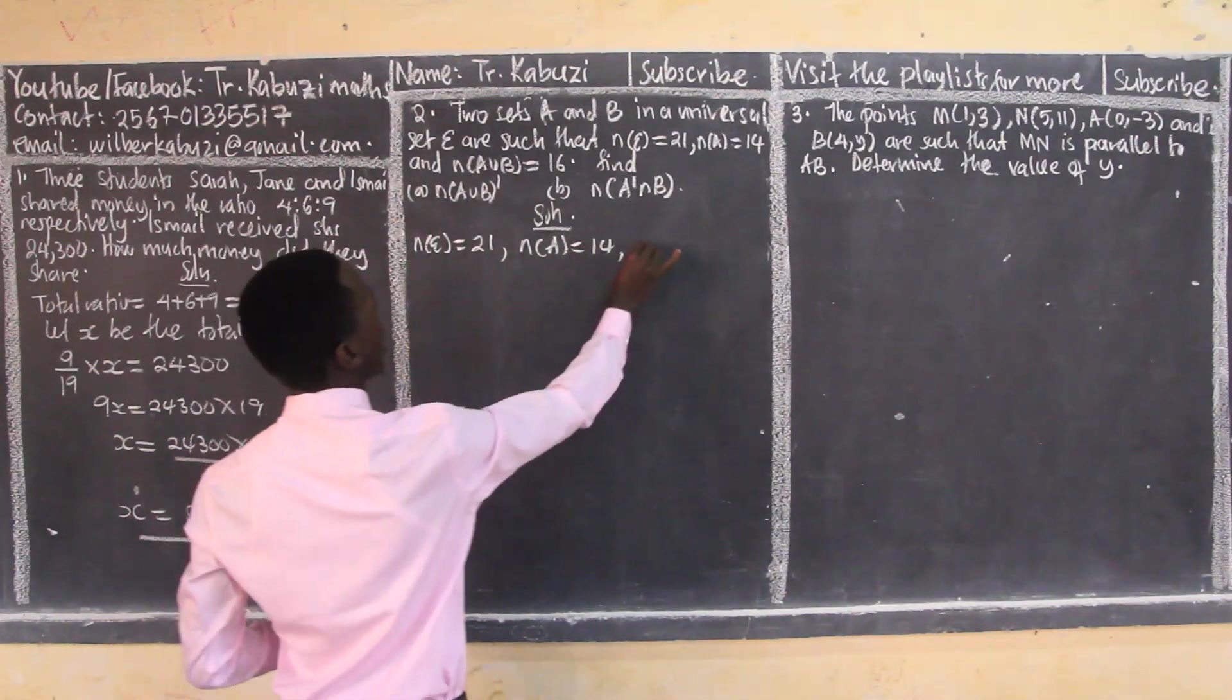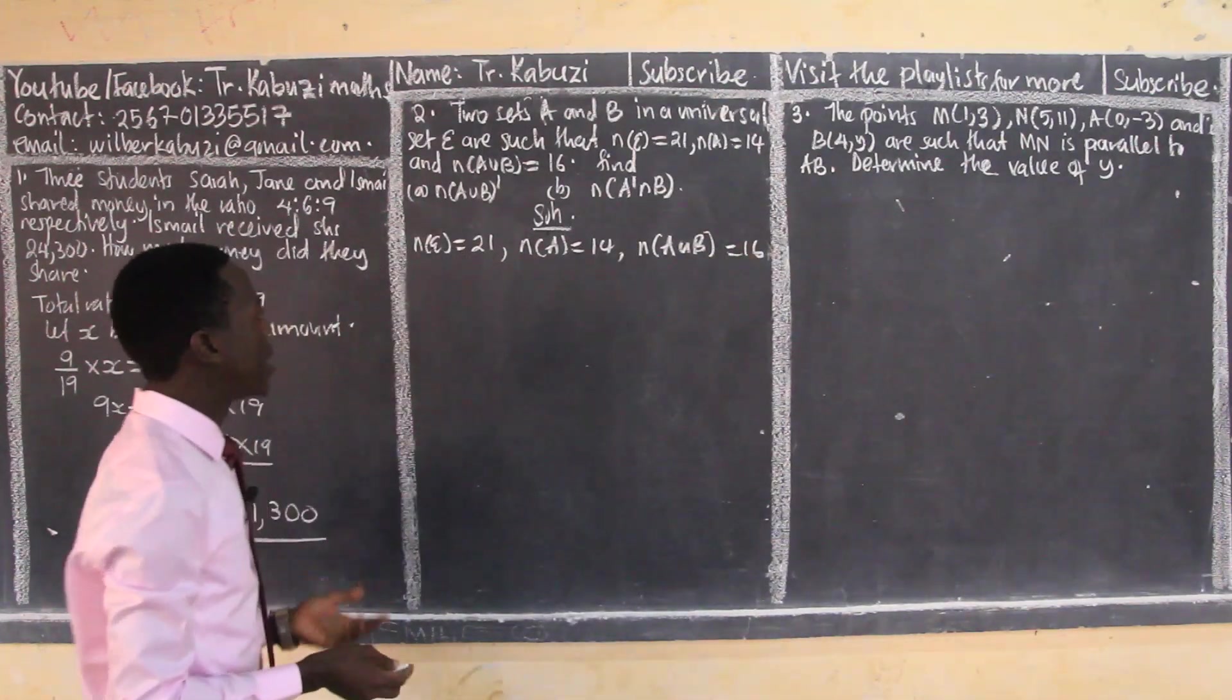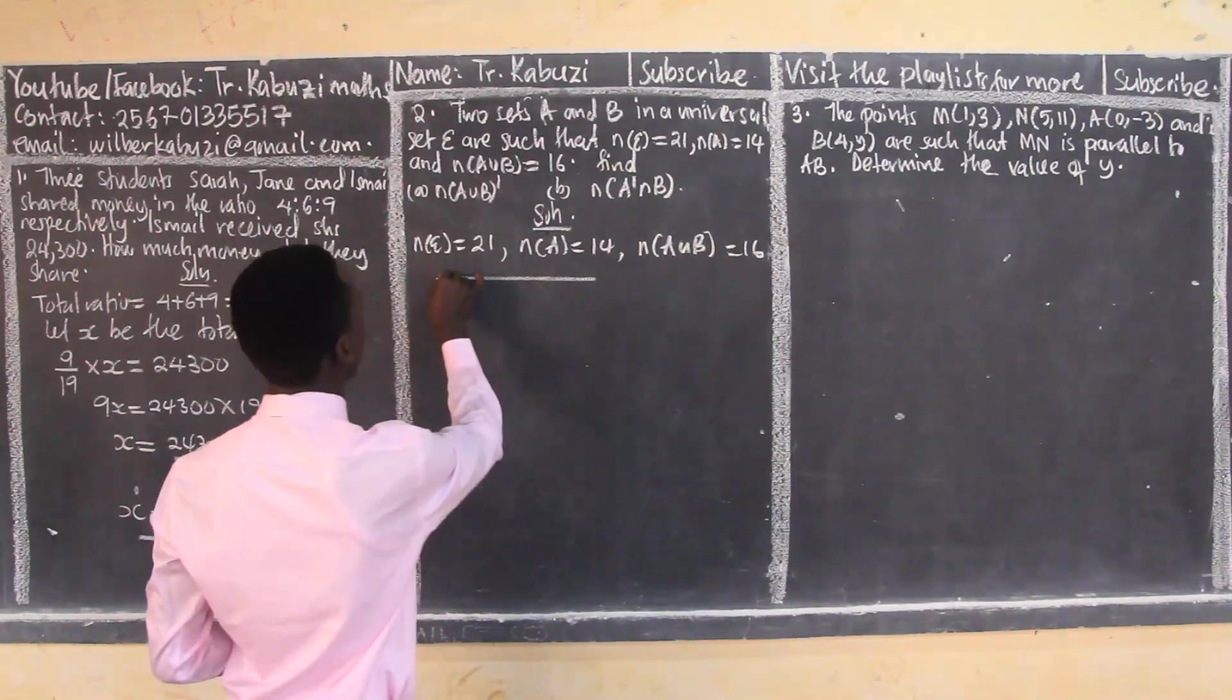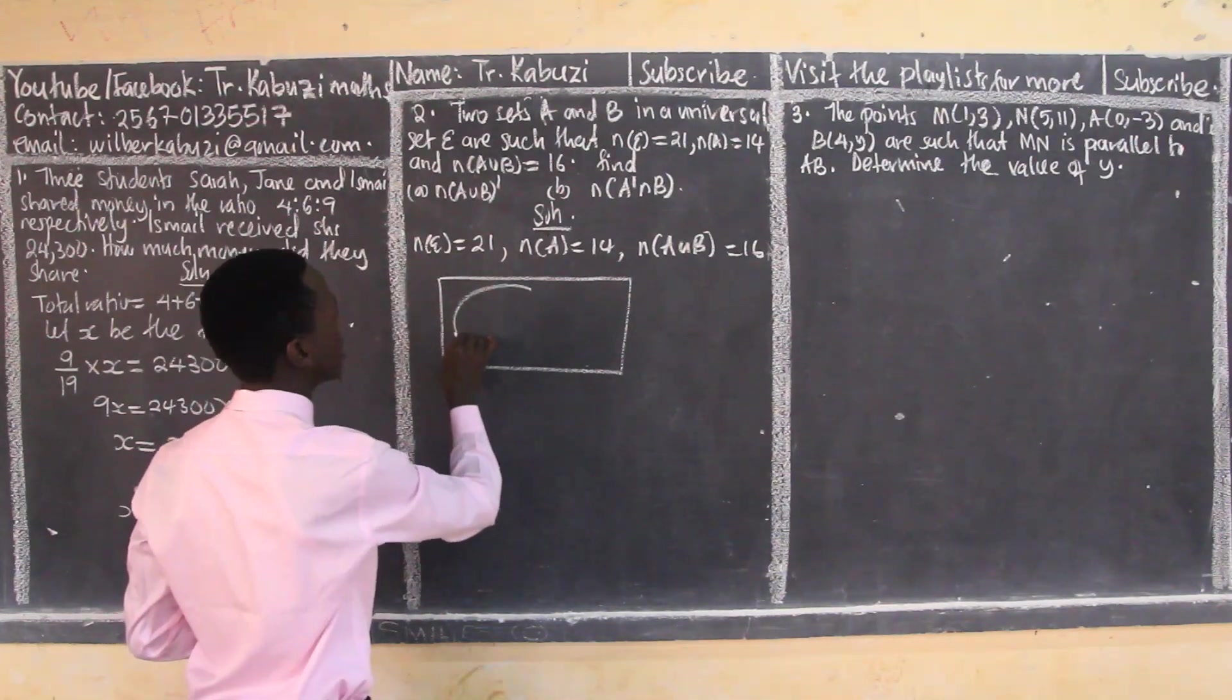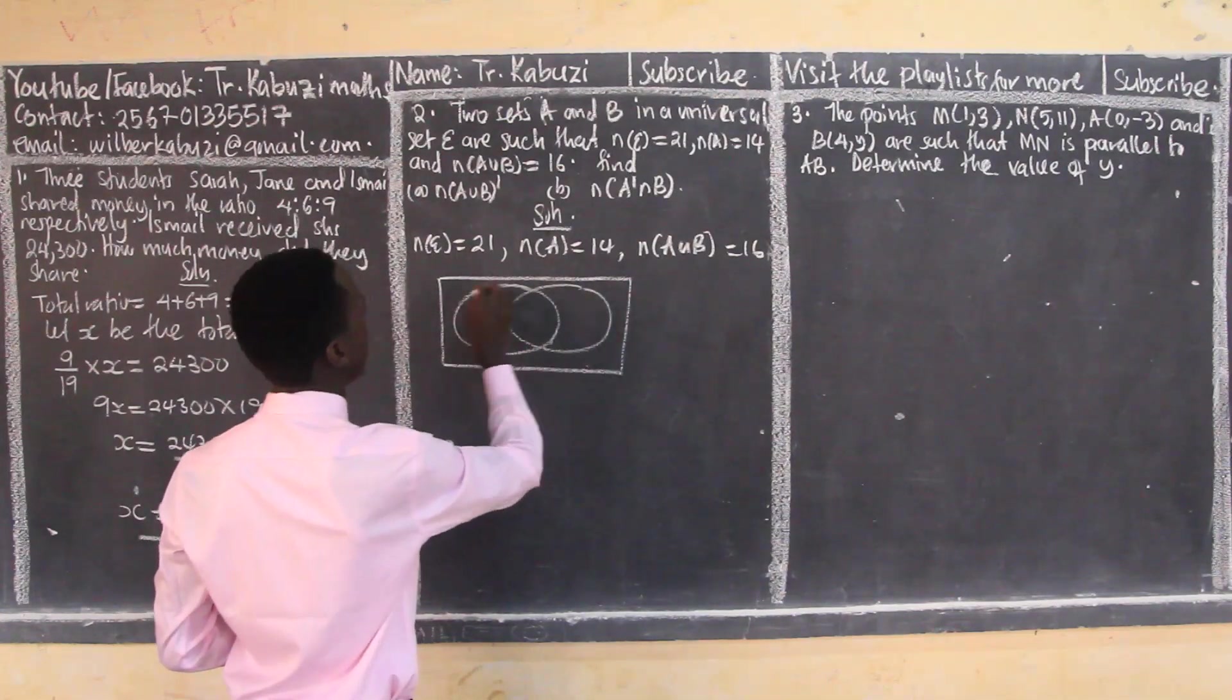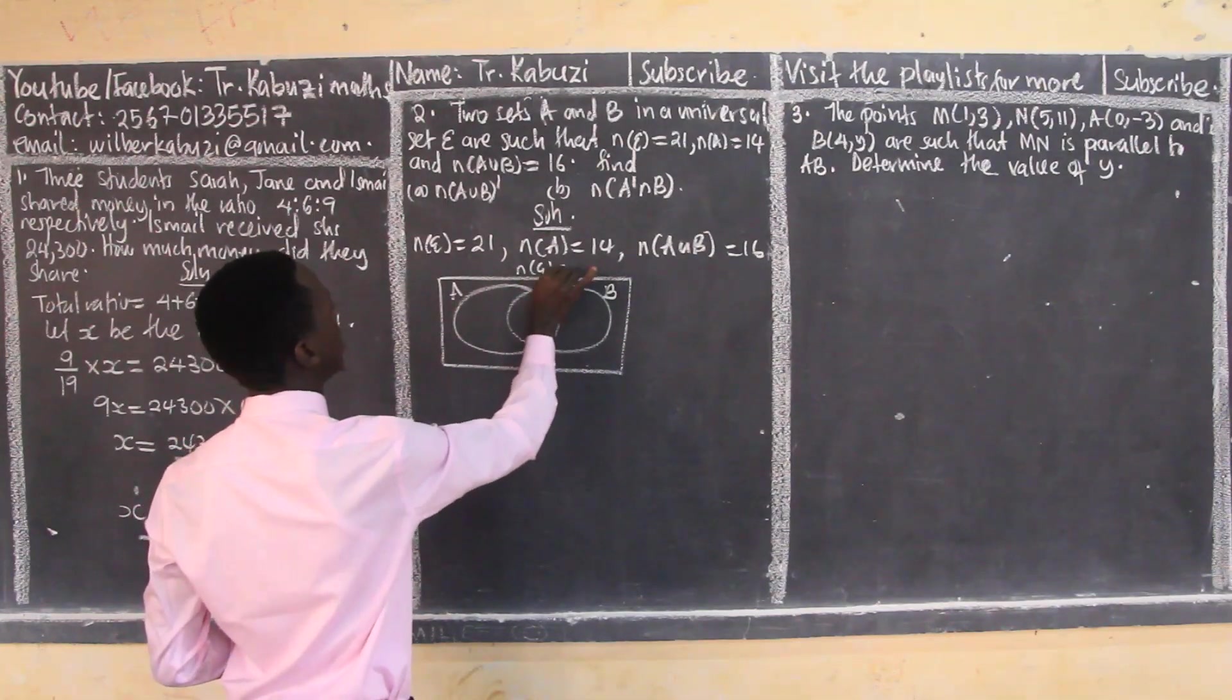They are also giving us the number in the union, which is 16. In simple terms, you can do this by using a simple sketch. You can use this simple sketch to get the information. If this is my A, this will be my B. Of course, this will be my universe, which is 21.